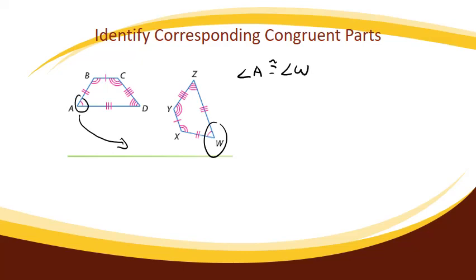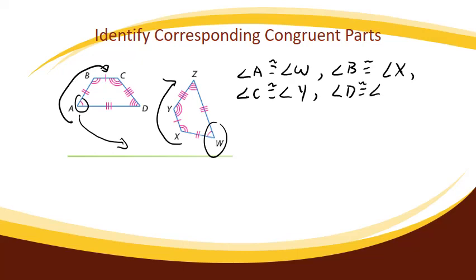And then angle B is then congruent to, I'm going to move counterclockwise, angle X. And then angle C is congruent to angle Y. And lastly, angle D is congruent to angle Z.